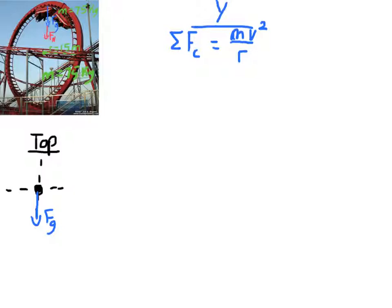What is the minimum speed you can go and still make it through the loop? If you're going too slow, you'll come up and then just fall down — not enough velocity to make it all the way around. If you're going too fast, you'll want to go above the track and the track will have to provide extra normal force to push you down. The minimum speed is where gravity is the only thing providing the centripetal force.